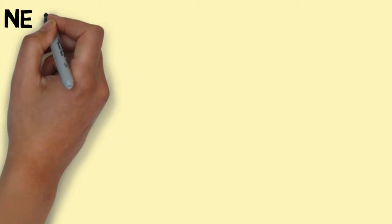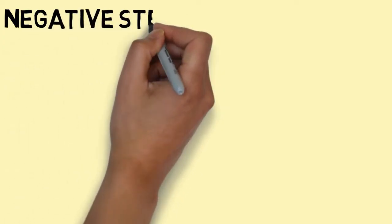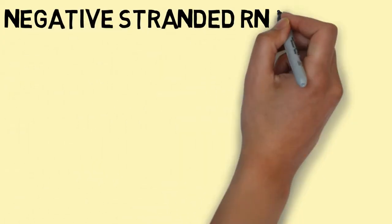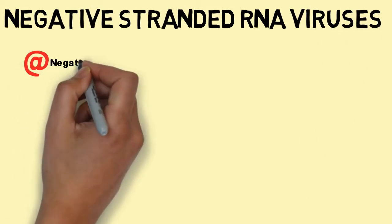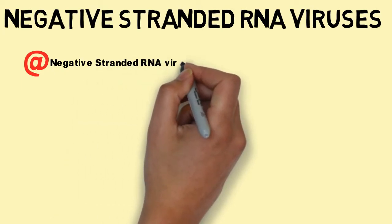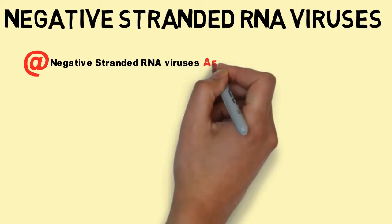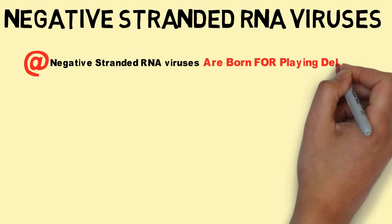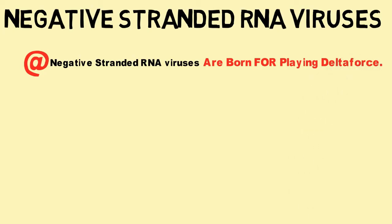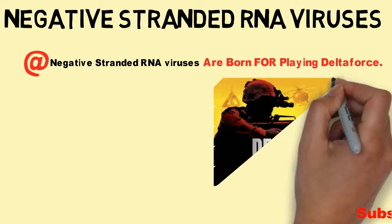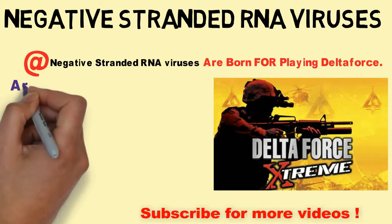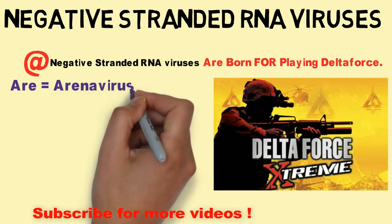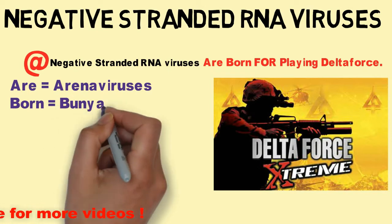Now let's move to the negative-stranded RNA viruses, or negative-sense RNA viruses. The mnemonic is: 'Negative-stranded RNA viruses are Born For Playing Delta Force,' where R is for Arenaviruses and Born is for Bunyaviruses.